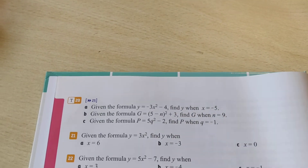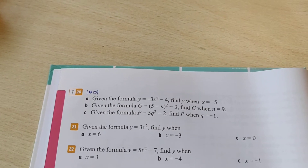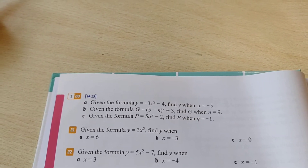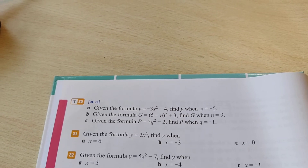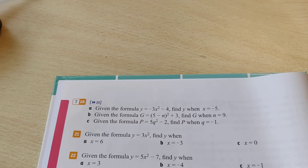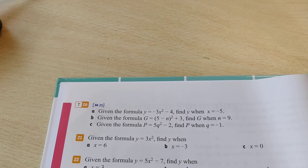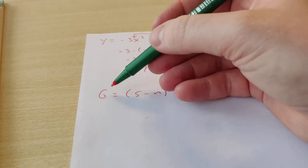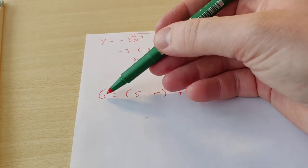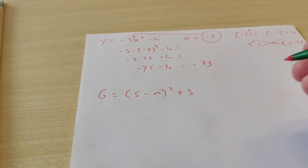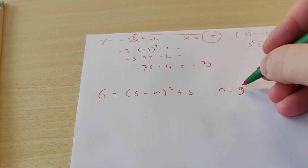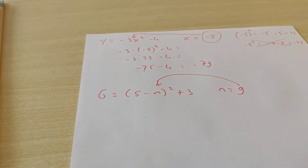Then we're going to look at exercise 20B. It says there a new formula: g equals, in brackets, 5 minus n, squared, and then plus 3. They say find g when n is 9. You see that sometimes the letters can be different than x and y — they can be all sorts of letters. In this case, we know that n is 9, so we have to fill that in.